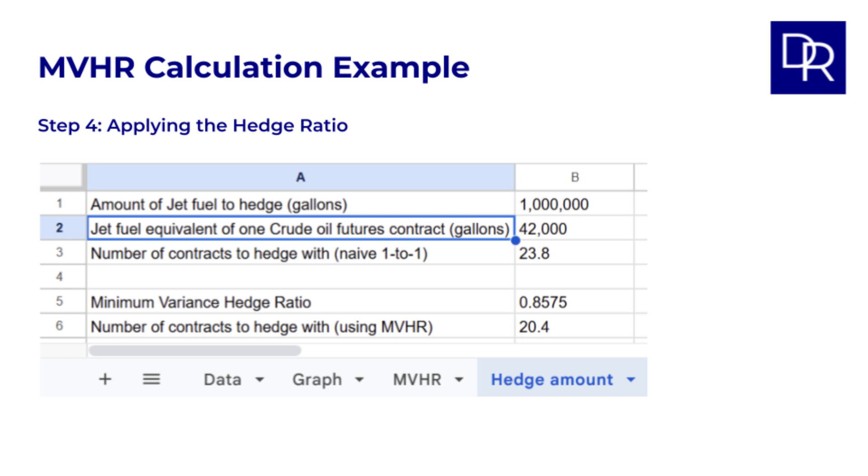But, using an MVHR of 0.8575, we adjust this. Adjusted hedge ratio equals the 0.8575 times the 23.8 contracts, which equals 20.4 contracts. So, we'd likely sell around 20 crude oil futures contracts, instead of 24. This lower number reflects the fact that crude oil prices are not a perfect proxy for jet fuel. We're minimizing the variance, not aiming for a perfect 1 to 1 offset.